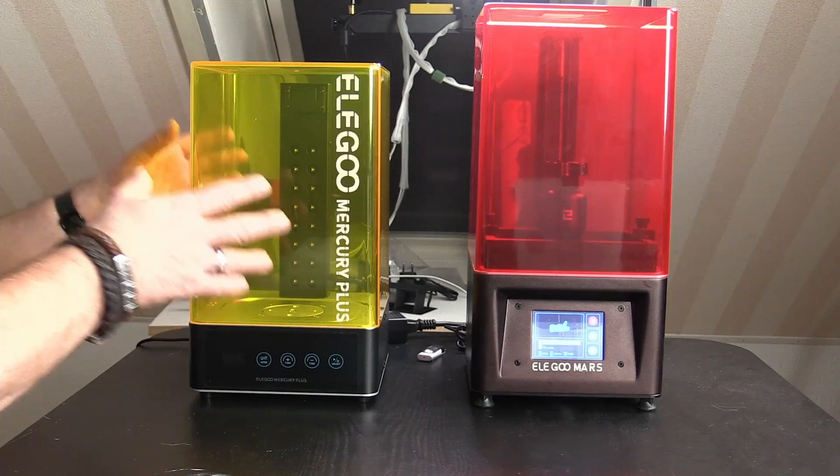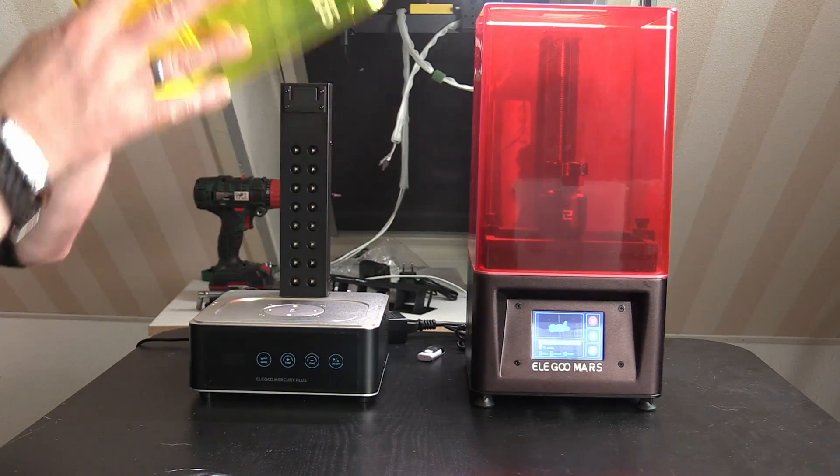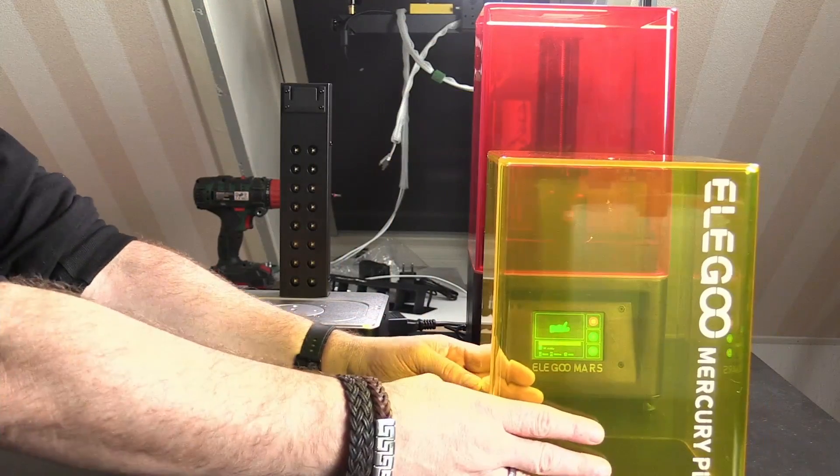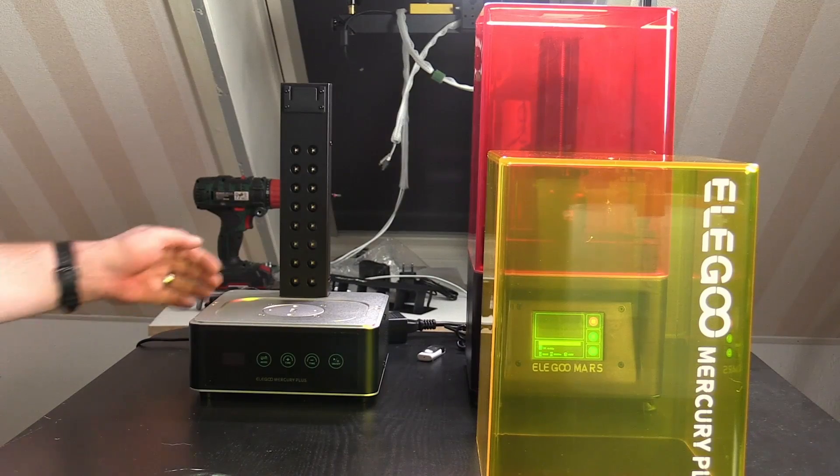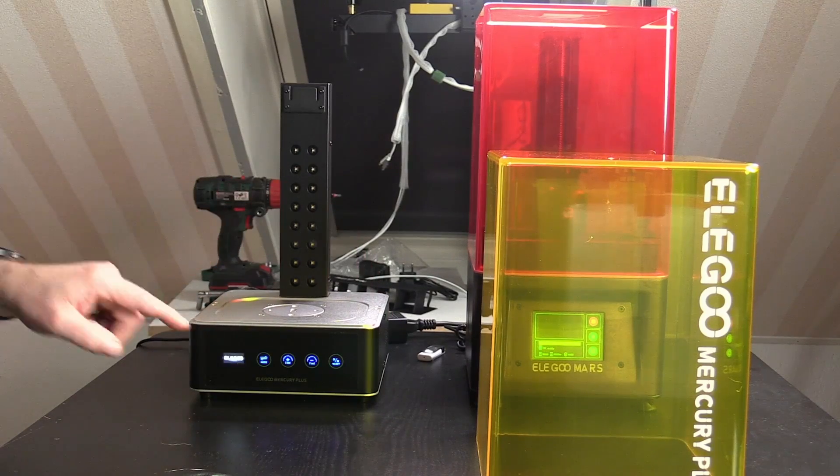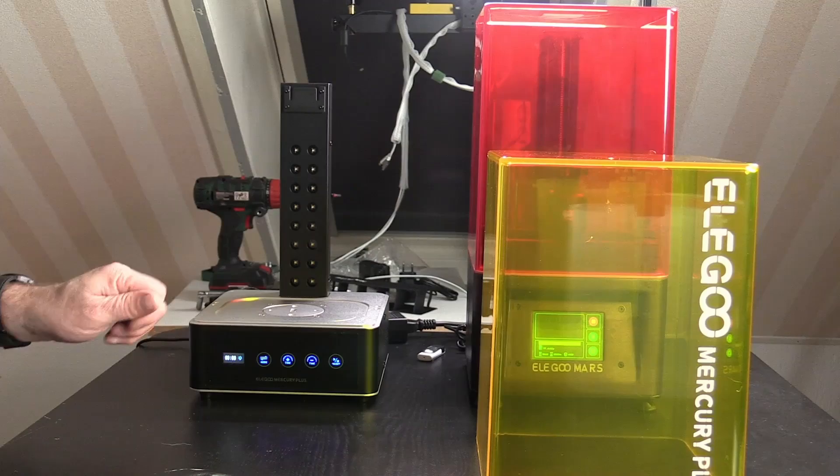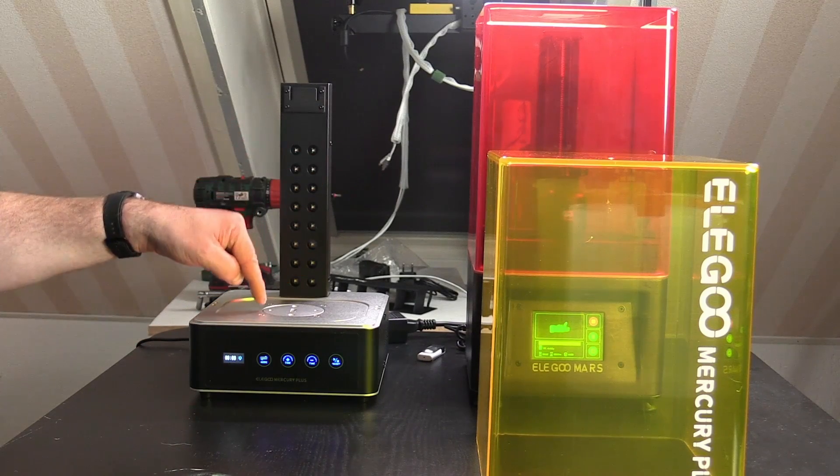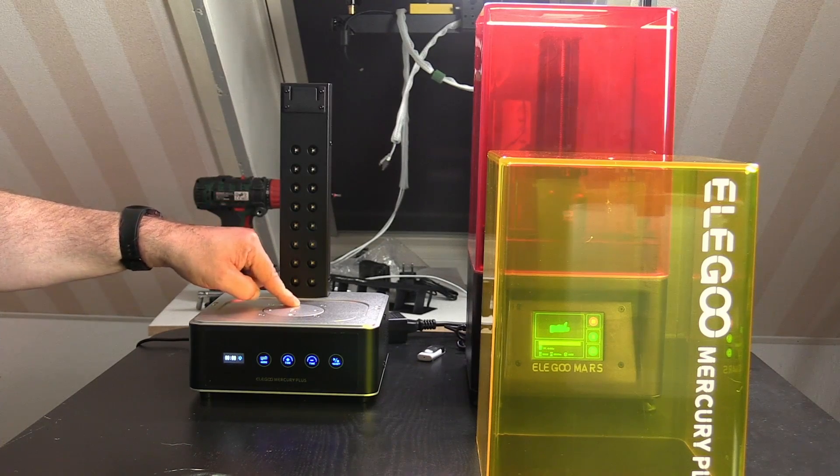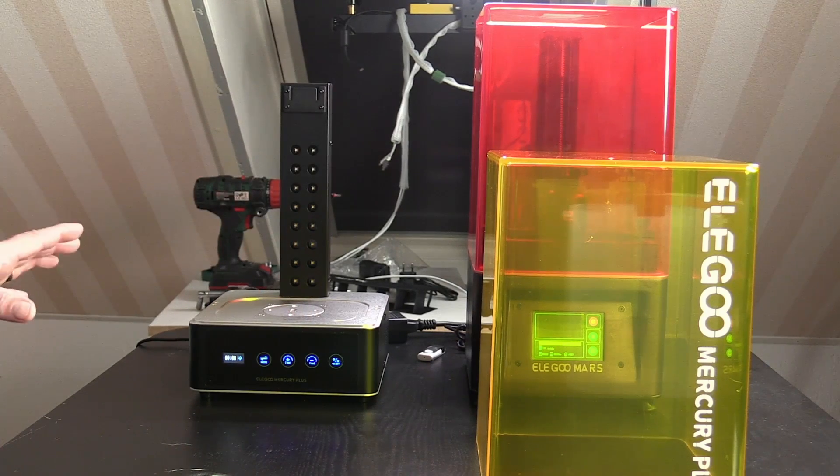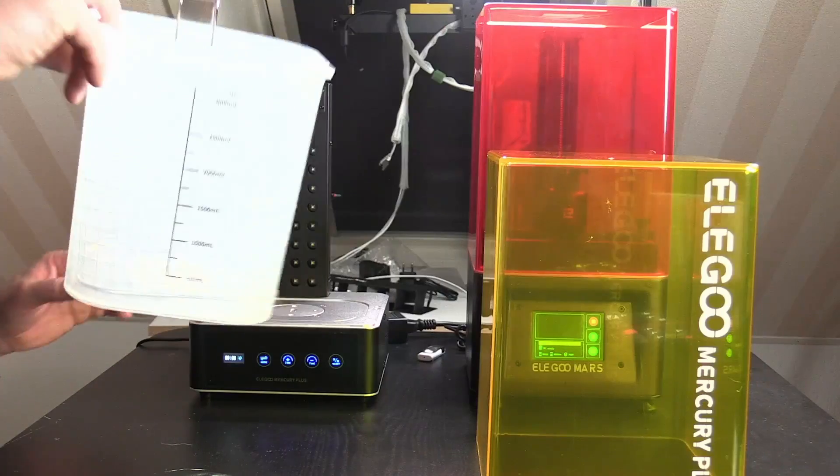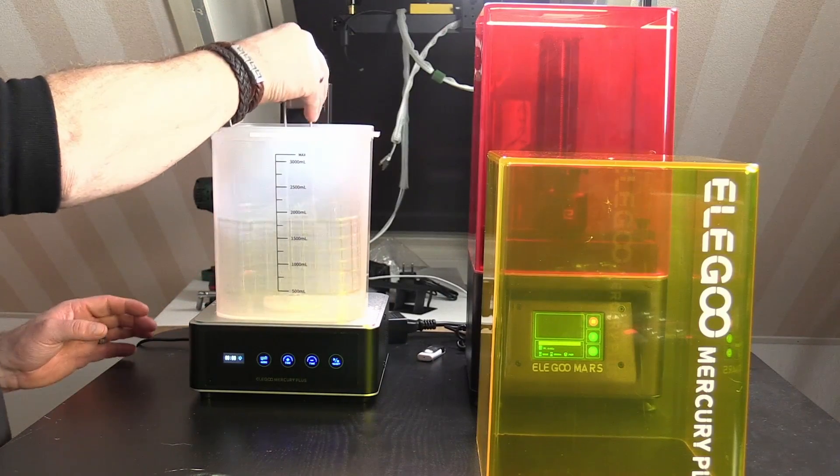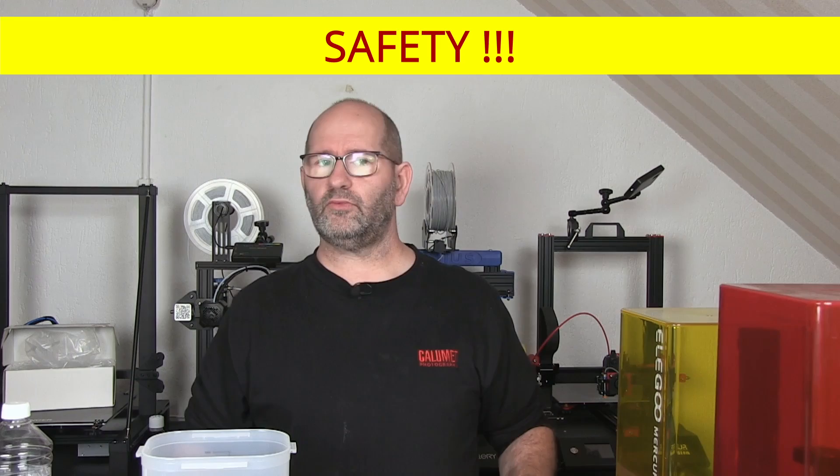While we are waiting for the print to succeed, we can already start taking a look at the curing station. When I turn it on, everything here turns on. Here are the LEDs in the bottom, and here there is this rotating disc which can be used to steer this basket.